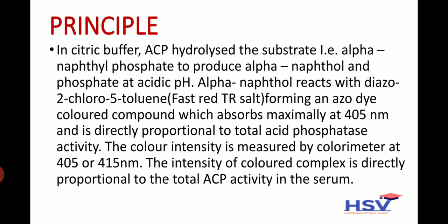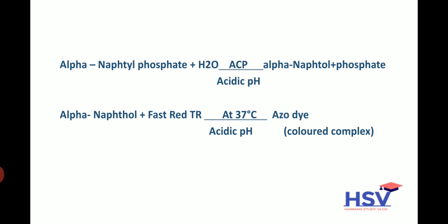The color intensity is measured by colorimeter at 405 nm and is directly proportional to the total ACP activity in the serum. Two equations relate to the principle: first, alpha naphthyl phosphate produces alpha naphthol and phosphate at acidic pH; second, alpha naphthol reacts with fast red TR salt to form a colored complex.